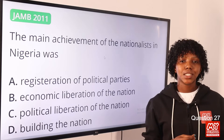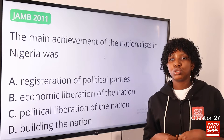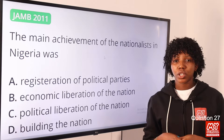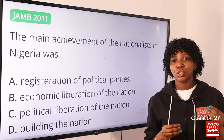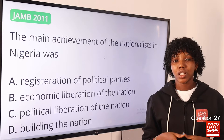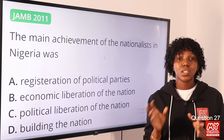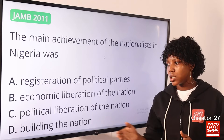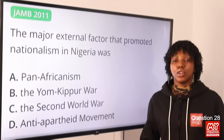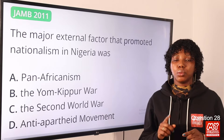Question 27: The main achievement of the nationalists in Nigeria was — nationalism grew out from the historical experience of colonialism. It grew from a social group who wanted to take charge of their lives, politics, and defend their interests against competing groups. Achievements of nationalist movements include political education, formation of political parties, and changes in constitution. The answer is option C: political liberation of the nation.